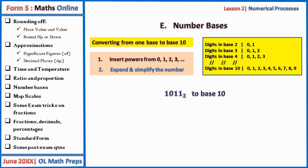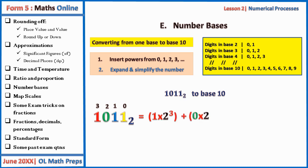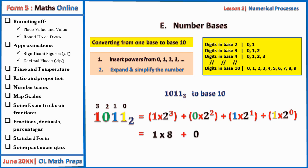Another example: convert 10112 to base 10. Write down the number and insert powers from zero, right to left: zero, one, two, three. Expand: 1 × 2³ + 0 × 2² + 1 × 2¹ + 1 × 2⁰. Simplifying: 8 + 0 + 2 + 1 = 11 base 10.